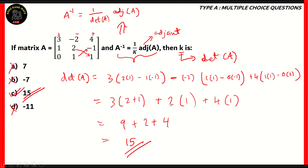So the other options turn out to be incorrect. To calculate the determinant of a three-by-three matrix, take the top row left to right: the leftmost element has a positive sign, the middle has a negative sign, the rightmost has a positive sign. For each element, open a bracket with the two-by-two matrix obtained by deleting that element's row and column, then cross-multiply. Since A inverse equals 1/k times adjoint of A, and the formula is A inverse equals 1 over determinant of A times adjoint of A, k equals the determinant of A, which is 15. So option C is correct.